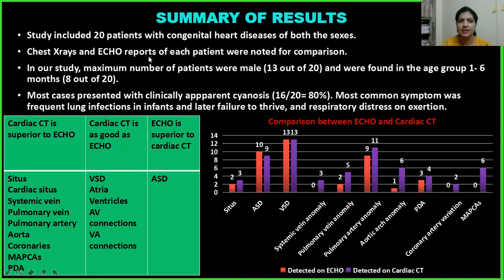Summary: The study included 20 patients with congenital heart diseases of both sexes. Maximum number of patients were male — 13 out of 20 — and 8 out of 20 were in the age group 1 to 6 months. Most common symptoms were frequent lung infections in infants, and later failure to thrive and respiratory distress on exertion. Comparison between ECO and cardiac CT: Cardiac CT was superior to ECO in diagnosing situs, cardiac situs, systemic veins, pulmonary veins, pulmonary artery, aorta, coronaries, MAPCAs, and PDAs. Cardiac CT was as good as ECO in diagnosing VSD, atria, ventricles, atrioventricular connections, and ventriculoarterial connections. ECO was superior to cardiac CT in diagnosing ASD.